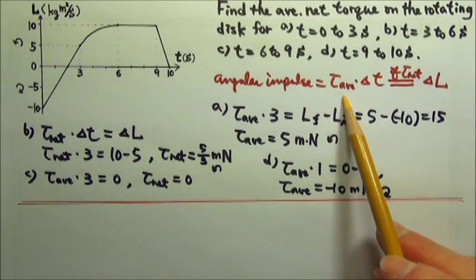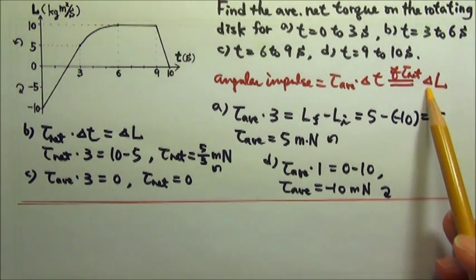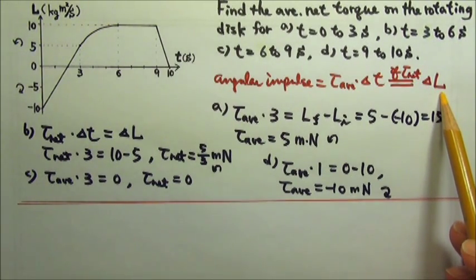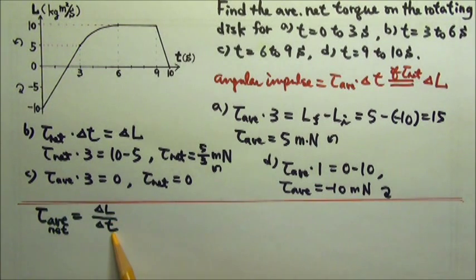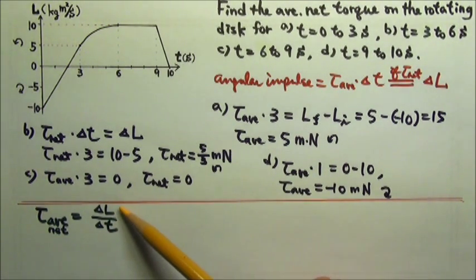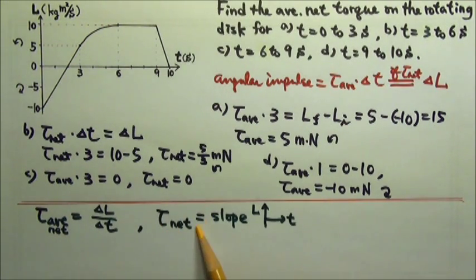By the way, since the average net torque times time equals the change in angular momentum, the average net torque would equal delta L divided by delta T. If we're dividing, that means it's rise over run. So the net torque is the slope of the L versus T graph, the angular momentum as a function of time graph.